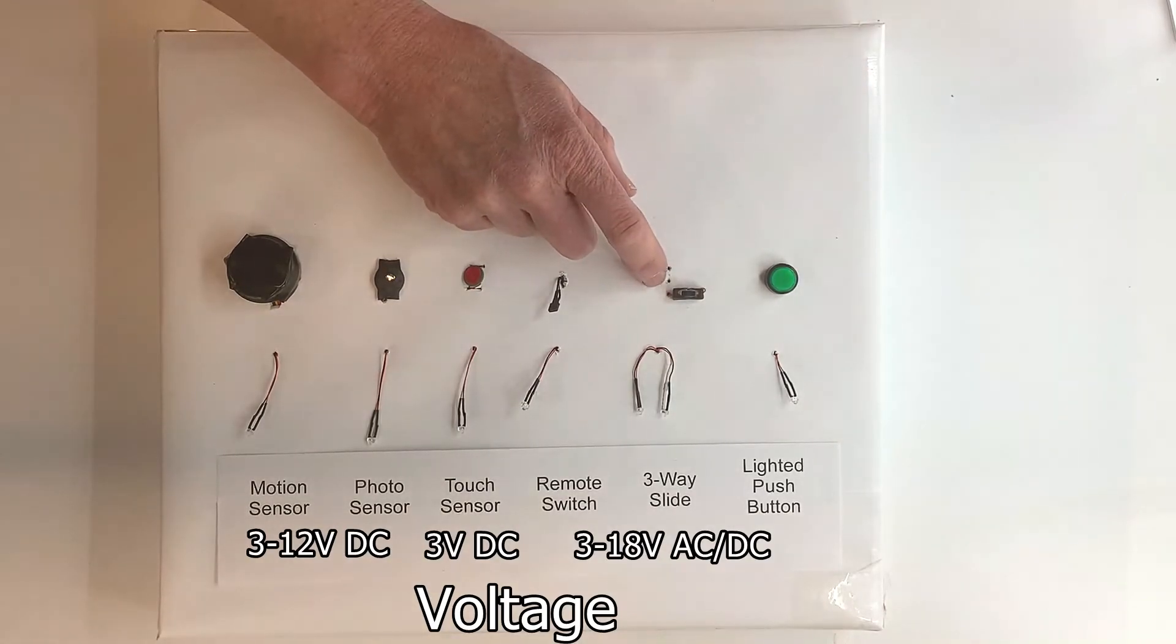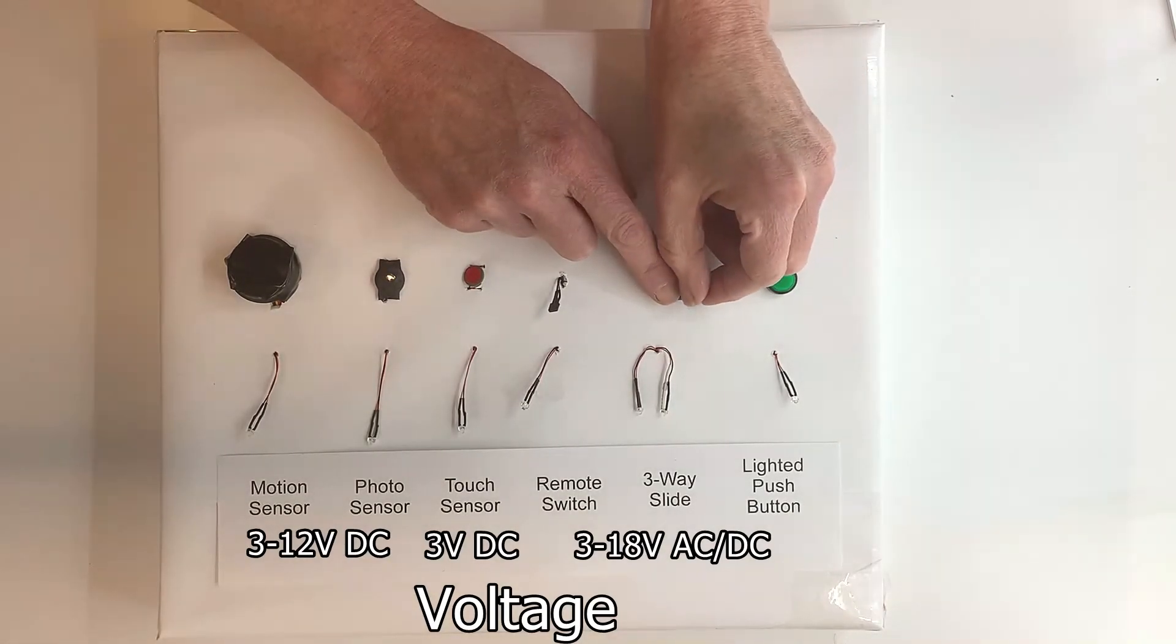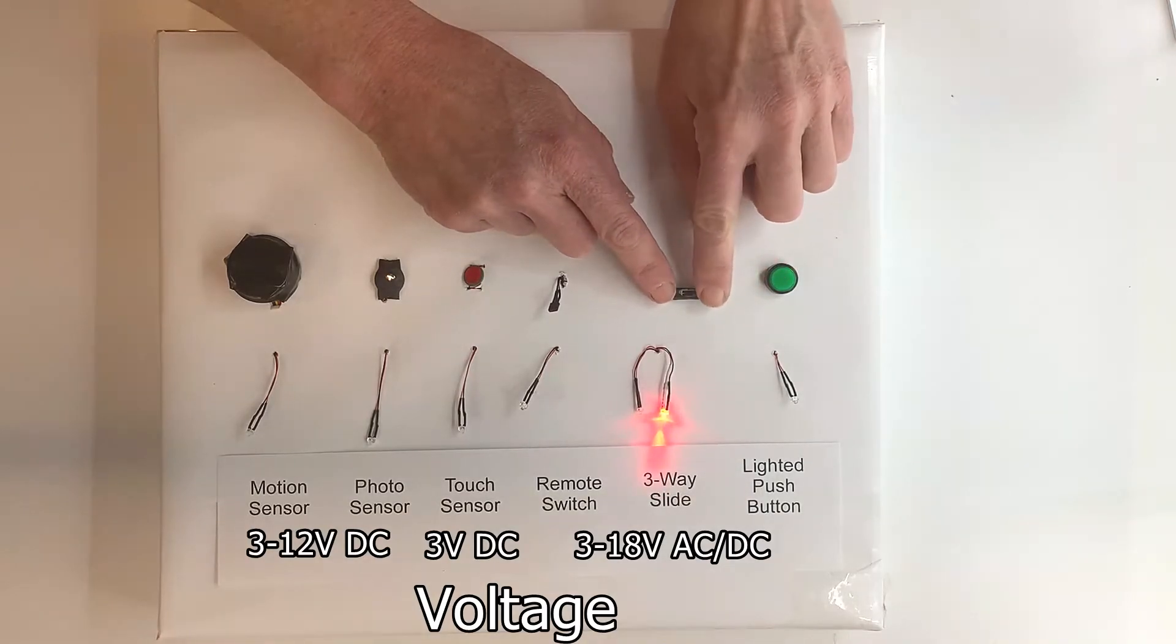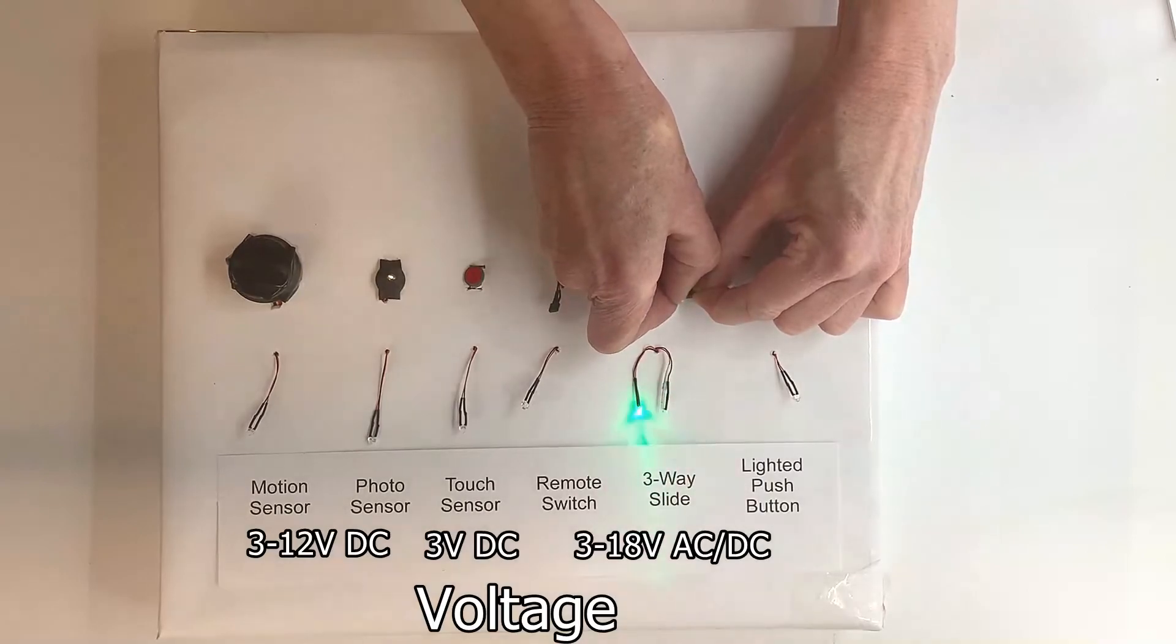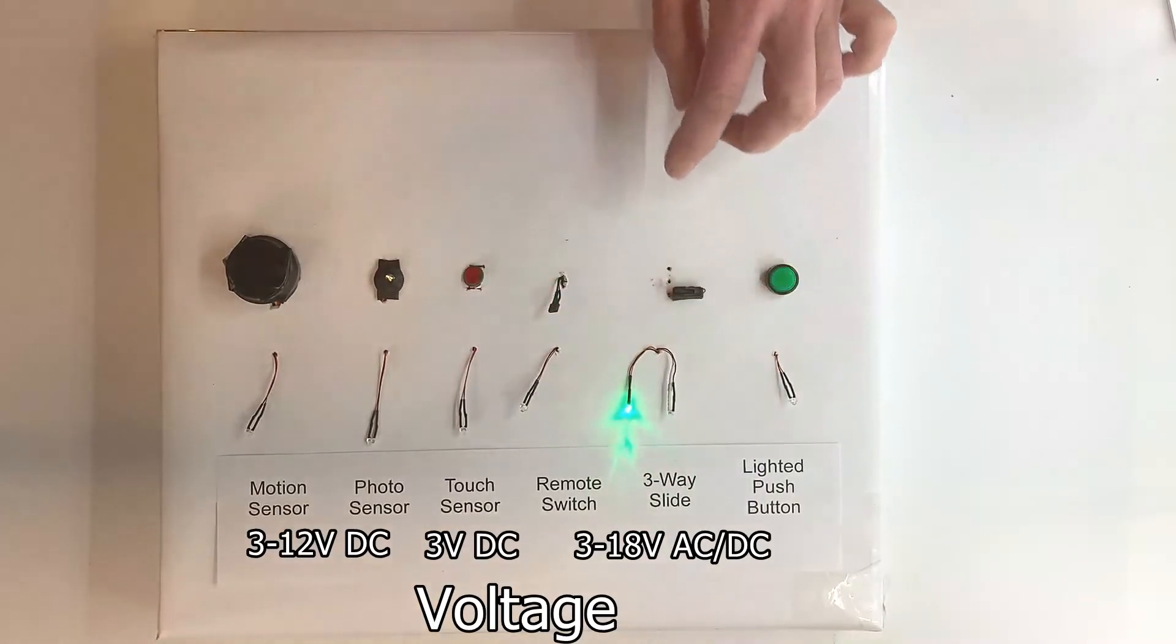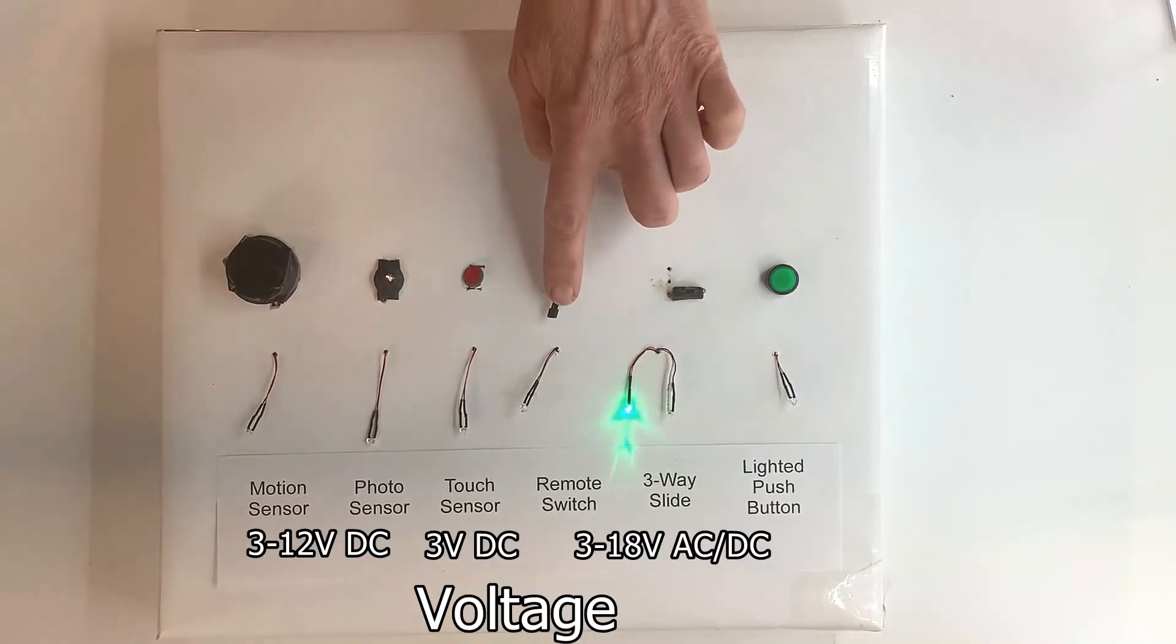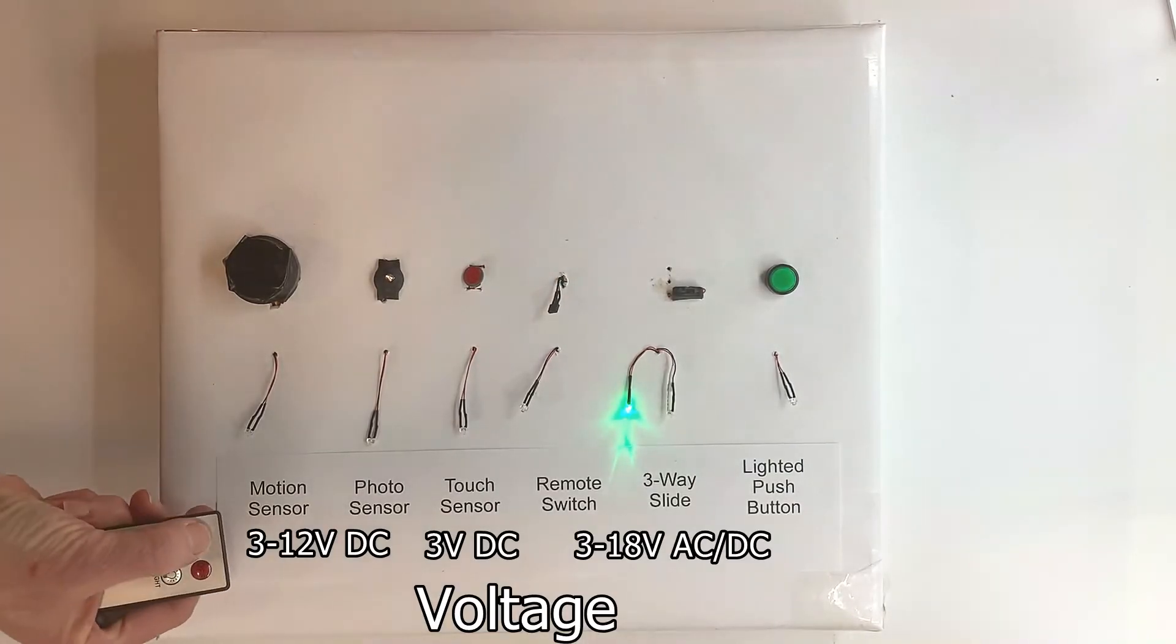It goes red to red, but on one side you can light one color, and then if you flip it the other way you can light another color. That's one use of that type of switch. This is our remote switch, so you'll need a remote to activate it.